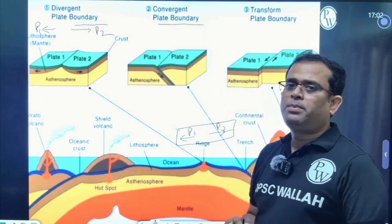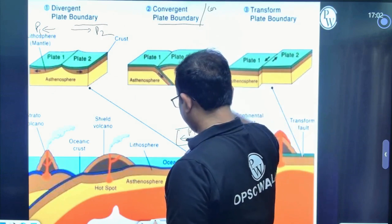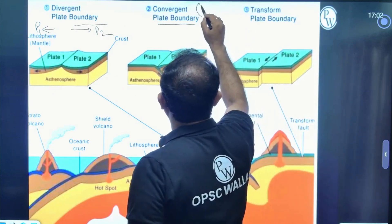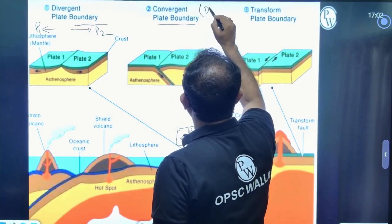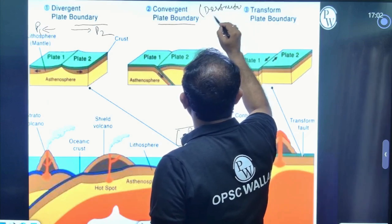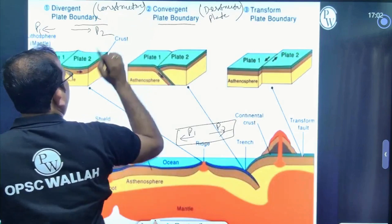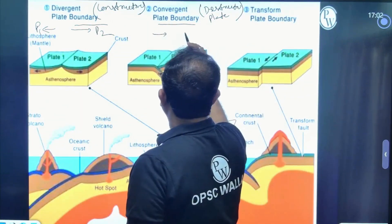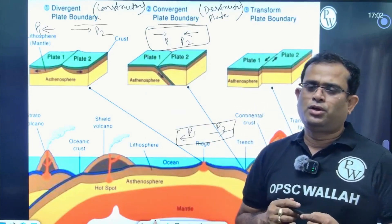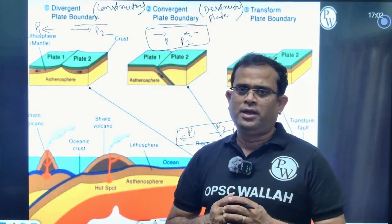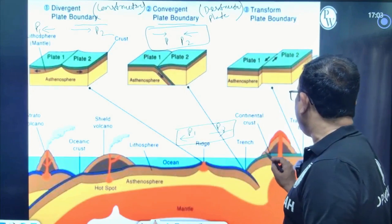Next, the convergent plate boundaries. Convergent plate boundaries are known to be destructive plate boundaries, where plates are moving towards each other. Divergent plate boundaries are your constructive plate boundaries.